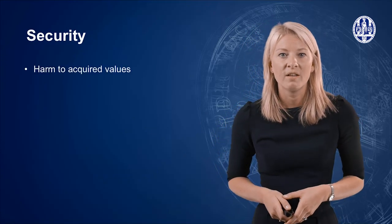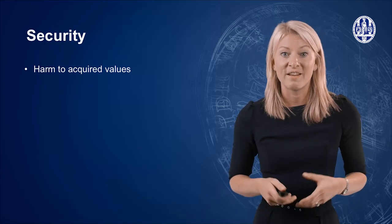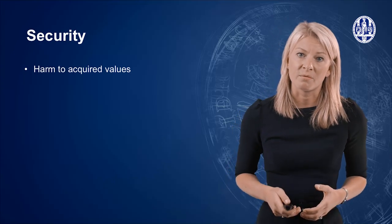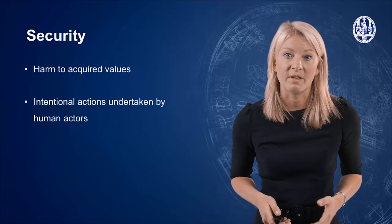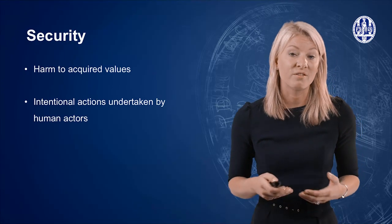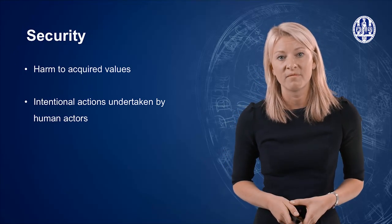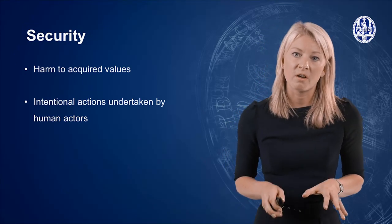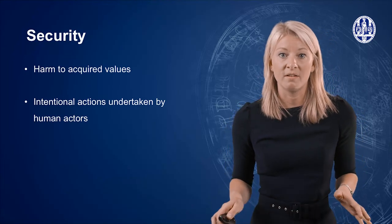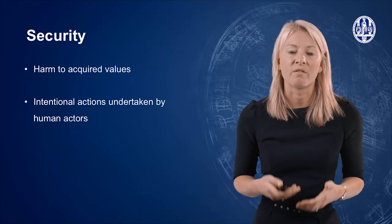Now let us have a closer look at security. Security entails a similar mechanism, namely harm to acquired values. The main difference between safety and security lies in the source of the threat. In the case of security, acquired values are harmed by intentional actions undertaken by human actors — it comes down to a person or a group of people taking deliberate actions, thereby causing a security threat. Security is thus about protection from intentional harm. An example is becoming a victim of an armed robbery, where your possessions or physical or mental health are harmed by the intentional actions of a human being.